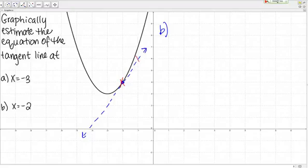I can see up here that it looks like it might go through negative 1, 6. Then, over here, here's another good one. It looks like it might go through negative 3, 2.